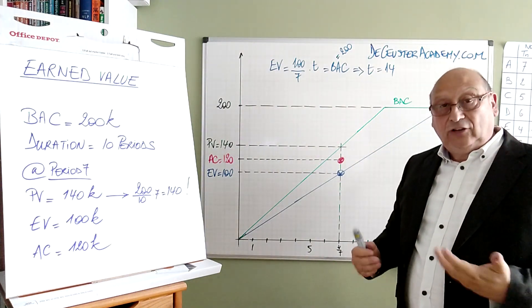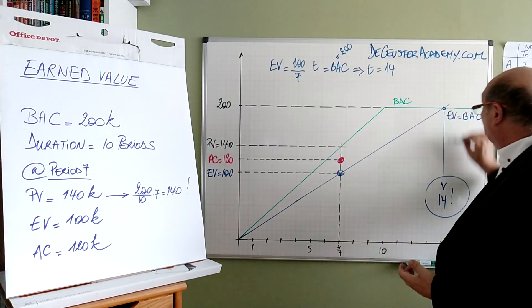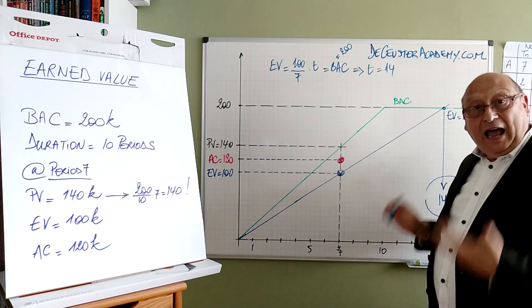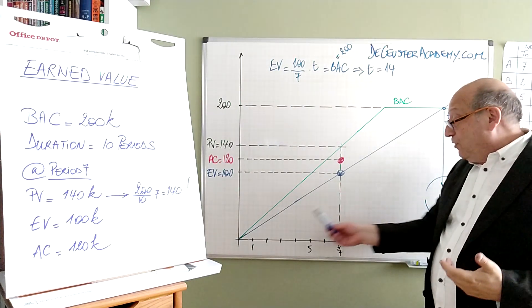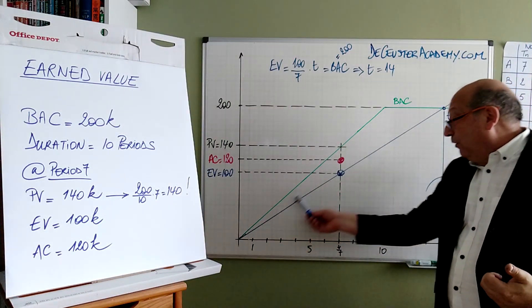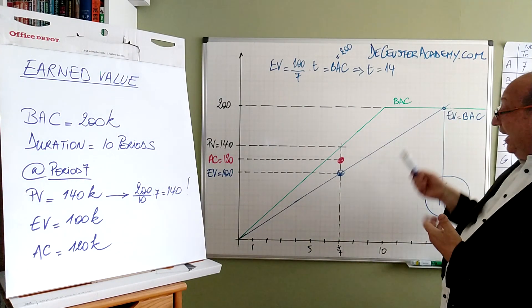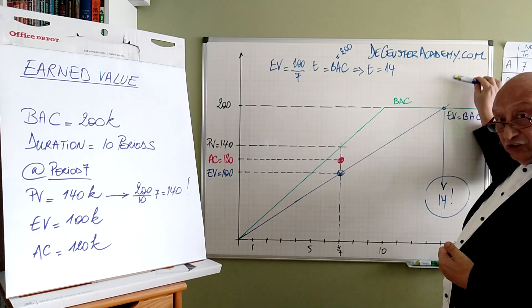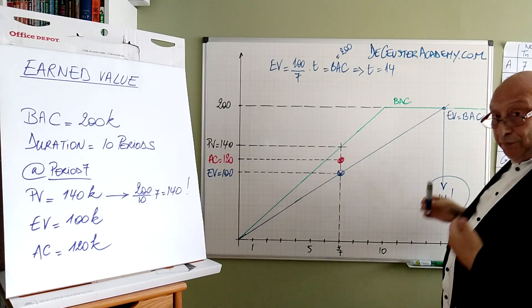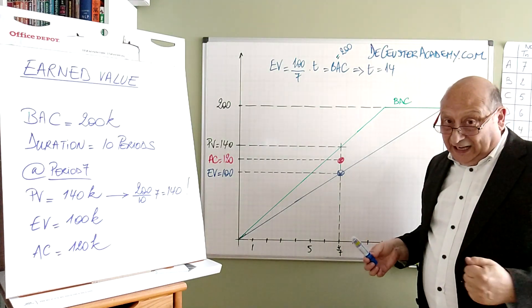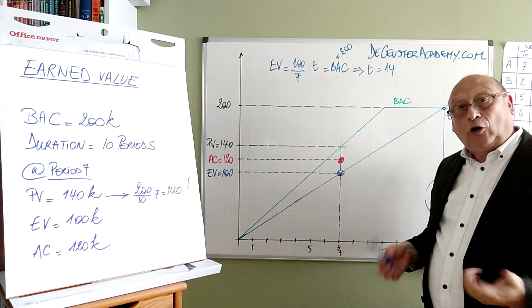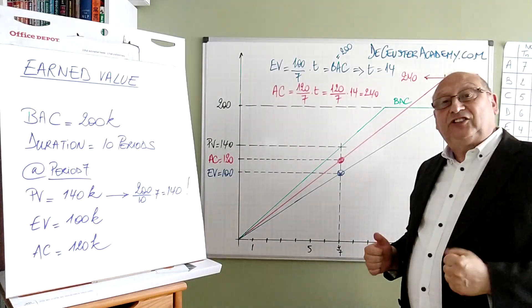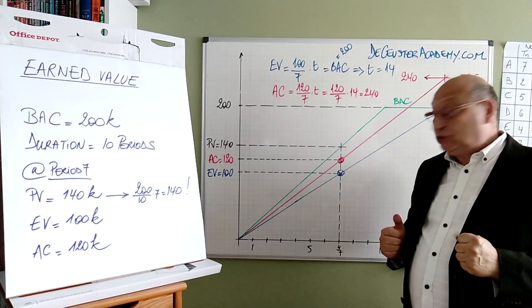So it's just a linear interpolation and we find the end time of the project. The next step is to do the same. We will interpolate or extrapolate this value until we reach the end of the project, and doing that we can find the estimate at completion.